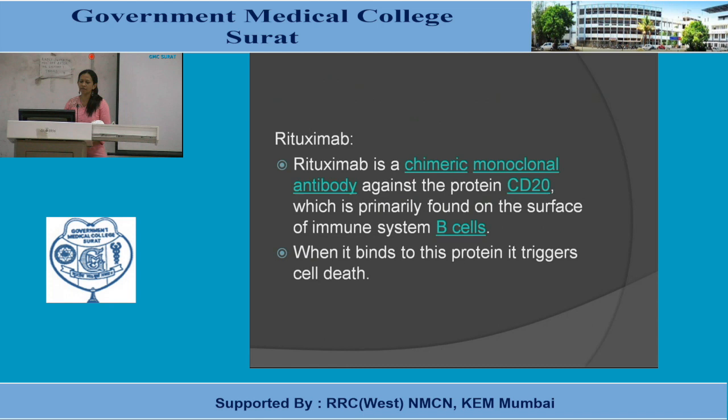Rituximab is a chimeric monoclonal antibody against CD20, a protein found primarily on the surface of B cells. When it binds to CD20, it triggers B cell death, targeting the B cell component of RA pathogenesis.